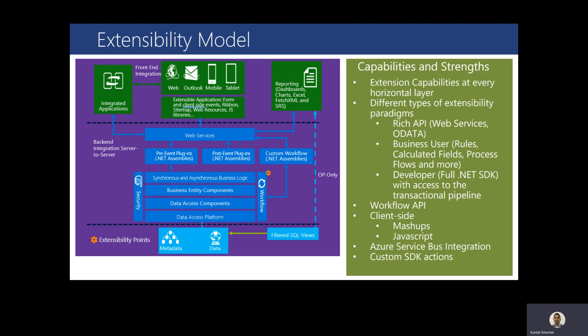As you can see in the diagram, Dynamics 365 platform provides extension capacity in every horizontal layer. Business users can take advantage of the low-code, no-code platform by configuring business rules or Power Automate to meet their organization's needs. Developers can also take advantage of the .NET SDK for extending the platform. Dynamics 365 provides rich APIs to connect external line-of-business applications, as well as an option to use JavaScript for client-side only changes.